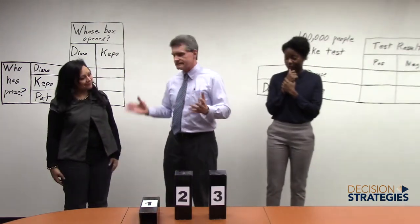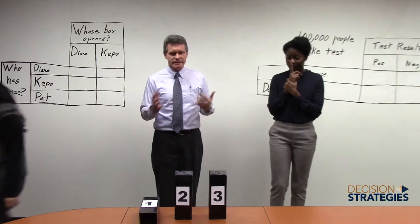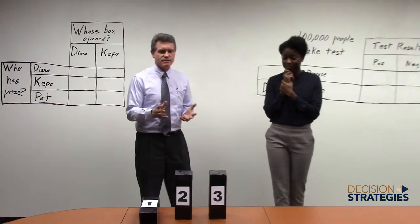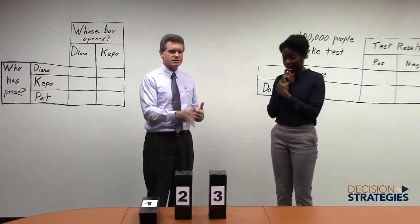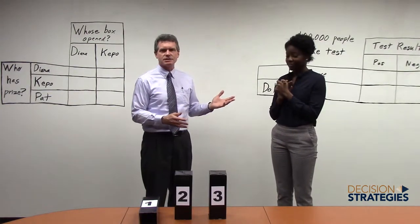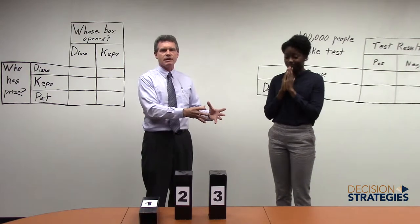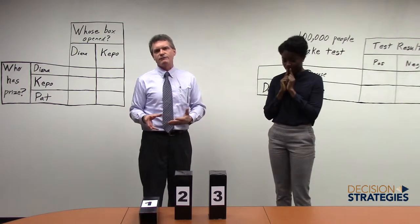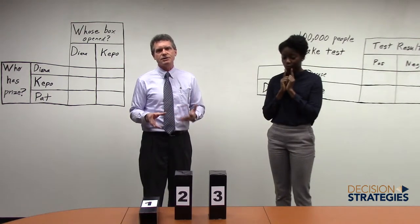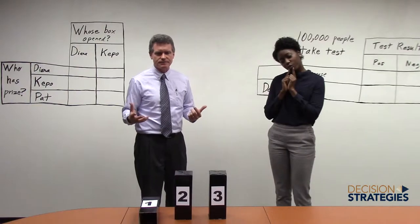In this case, I'm afraid I'm going to have to show Diana that her box was empty. Box number one was empty. Unfortunately. So that leaves two boxes, box number two and box number three, and Keppo is faced with the choice. Does she want to keep box number three or trade for box number two? So how does she figure this out?